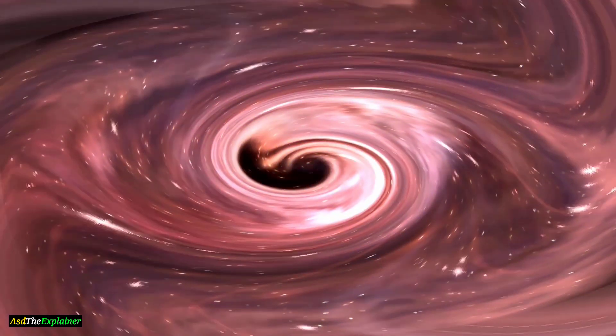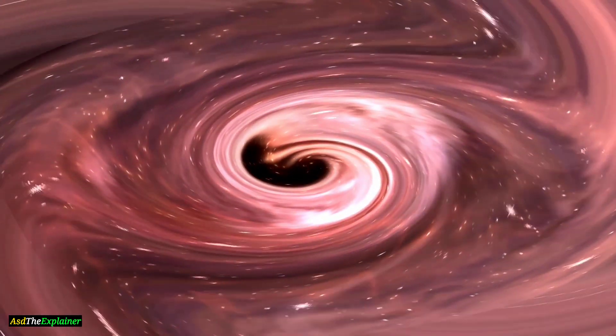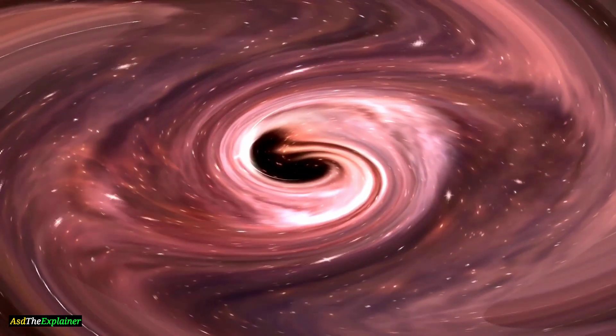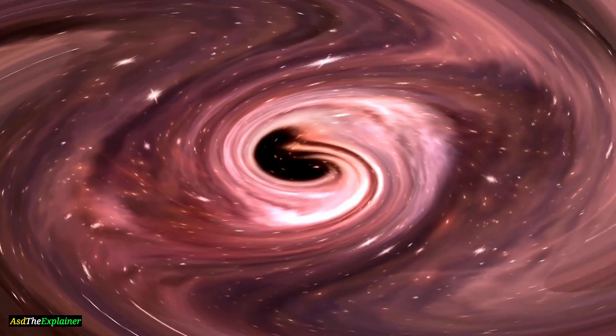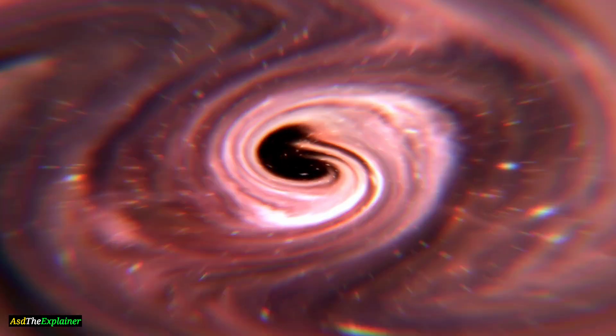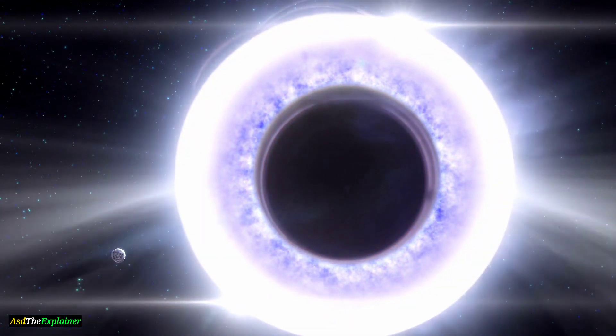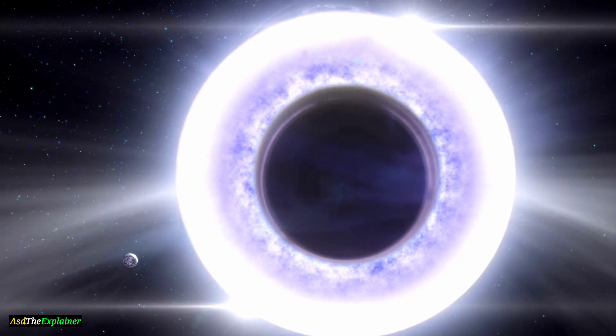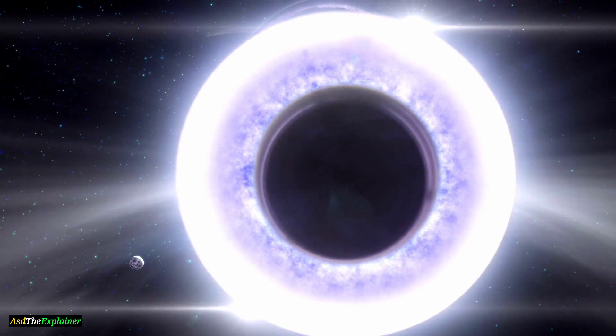For example, the observations of the accretion disk provide evidence for the existence of magnetic fields around black holes, which are believed to play a crucial role in the accretion process. The observations also help scientists better understand the dynamics of black holes and the way they influence the matter around them.